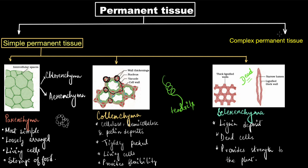Sclerenchyma, or dead tissues, make plant parts hard and stiff and provide strength to the plant. For example, the husk of the coconut — how hard it is — is made up of sclerenchyma. Sclerenchyma is so hard because the cell walls are thickened due to the deposition of a chemical called lignin.